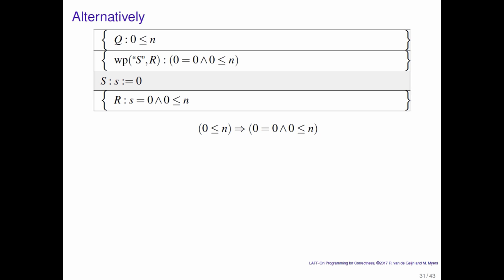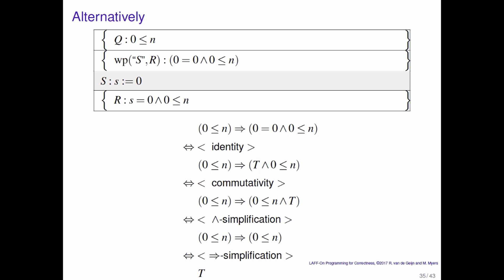And let's actually now put all of the steps in that we kind of glossed over in the previous slide. You first apply identity that gives you a true. Then you switch that to the other side through commutativity. Then you apply AND simplification. And finally you apply implication simplification. So again, we know that this annotated code segment is true.